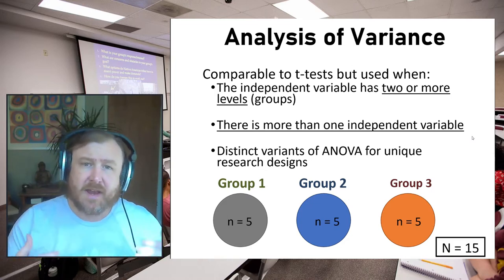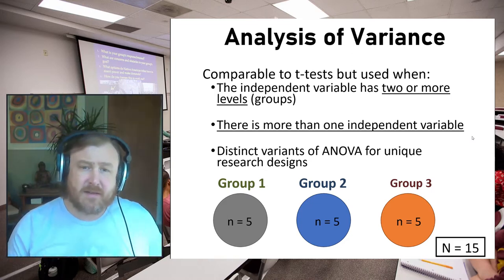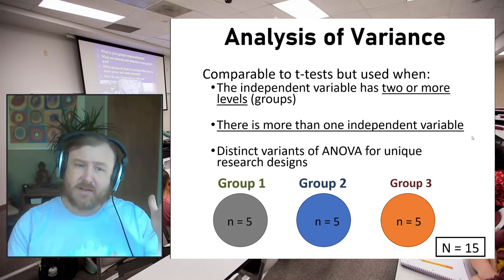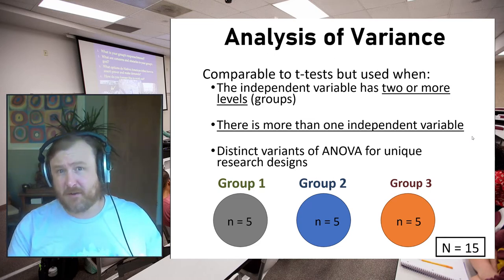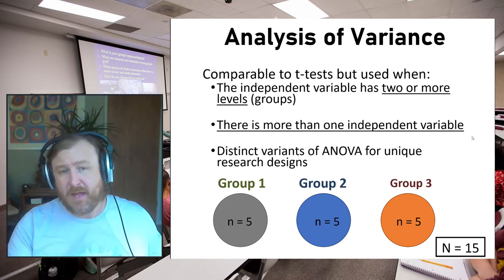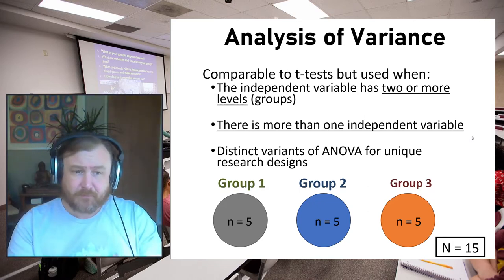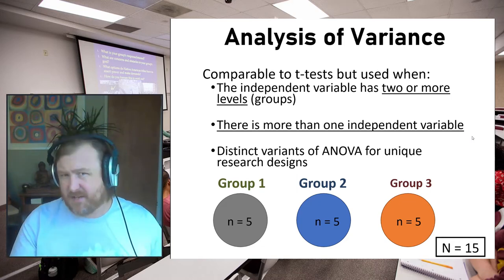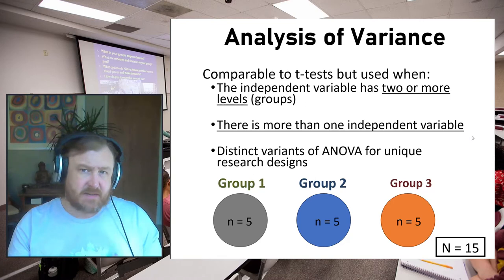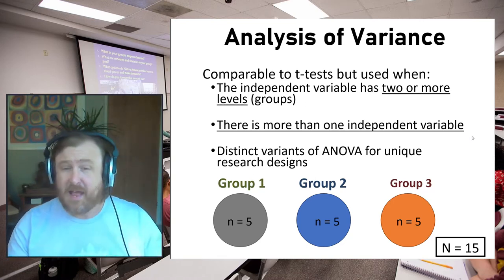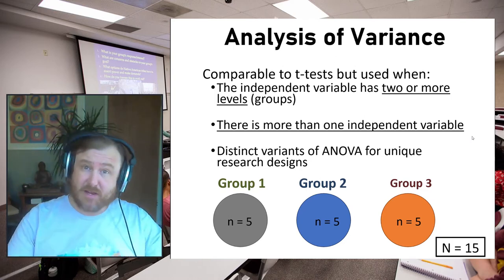In addition, analysis of variance allows us to examine unique independent variables. We might have different independent variables or factors that predict changes in a dependent variable, and ANOVA will allow us to measure all of those at the same time. Just like with t-tests — where there was a one-sample t-test, a correlated groups or repeated measures design, and an independent groups t-test (between subjects design) — there are also distinct variants based on your research design with ANOVA.